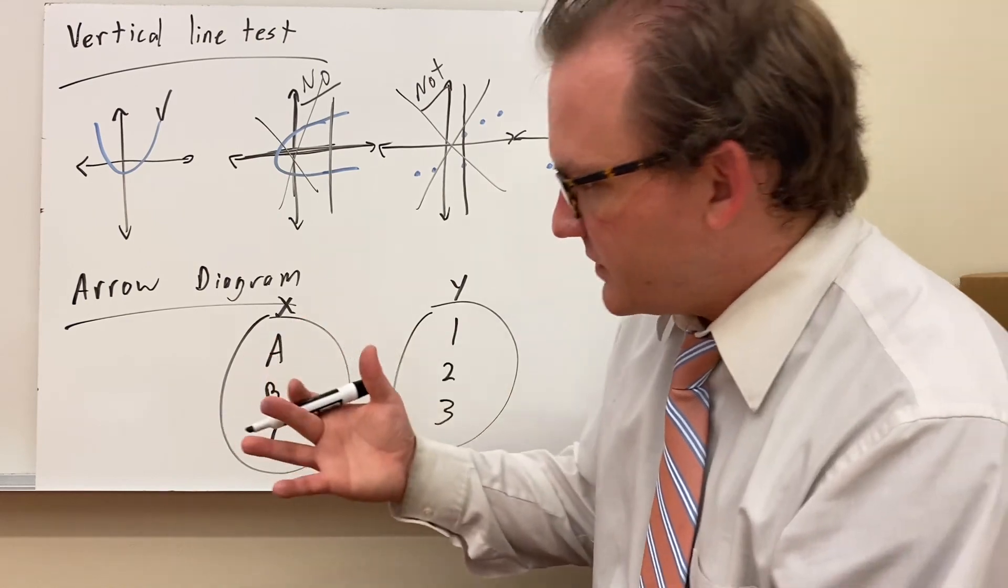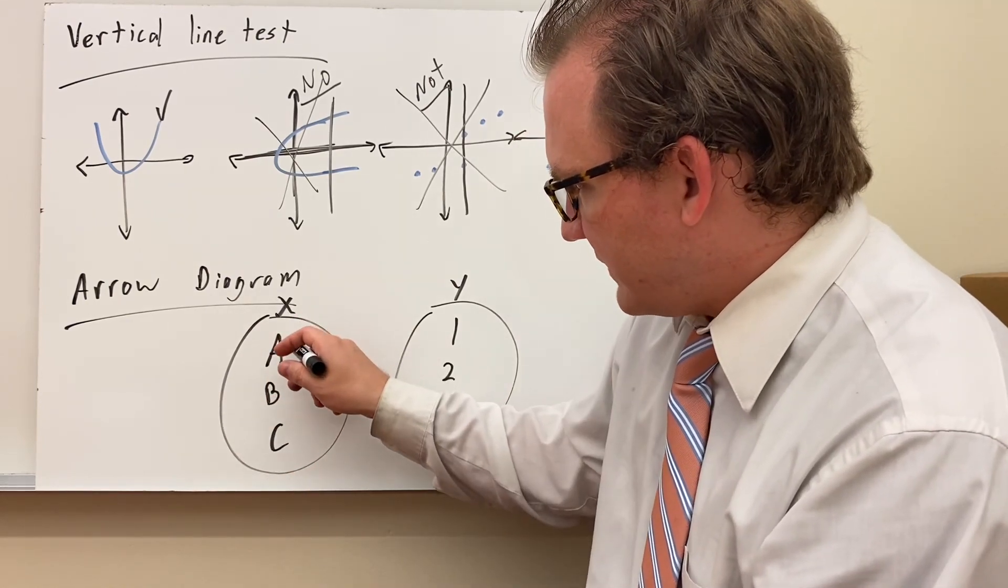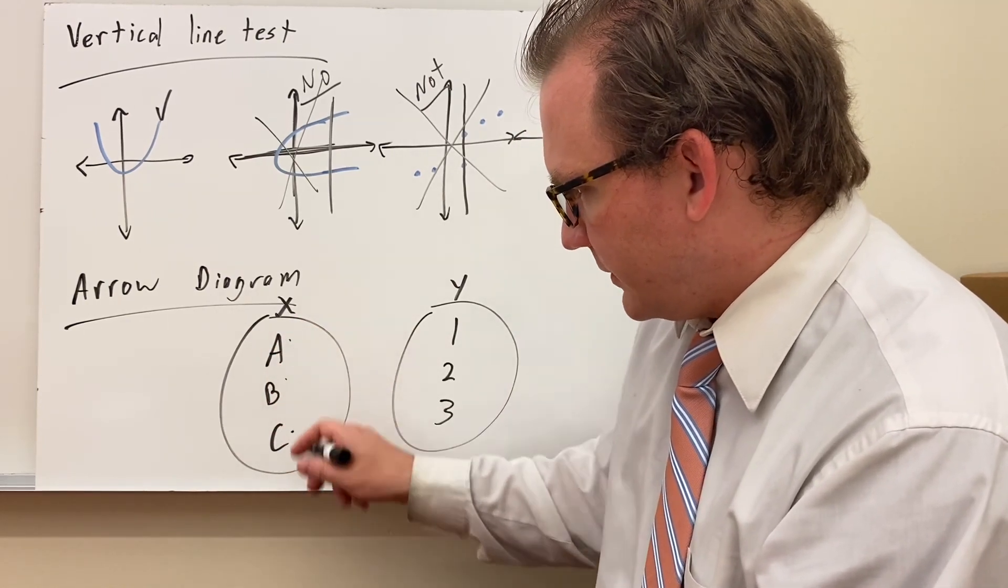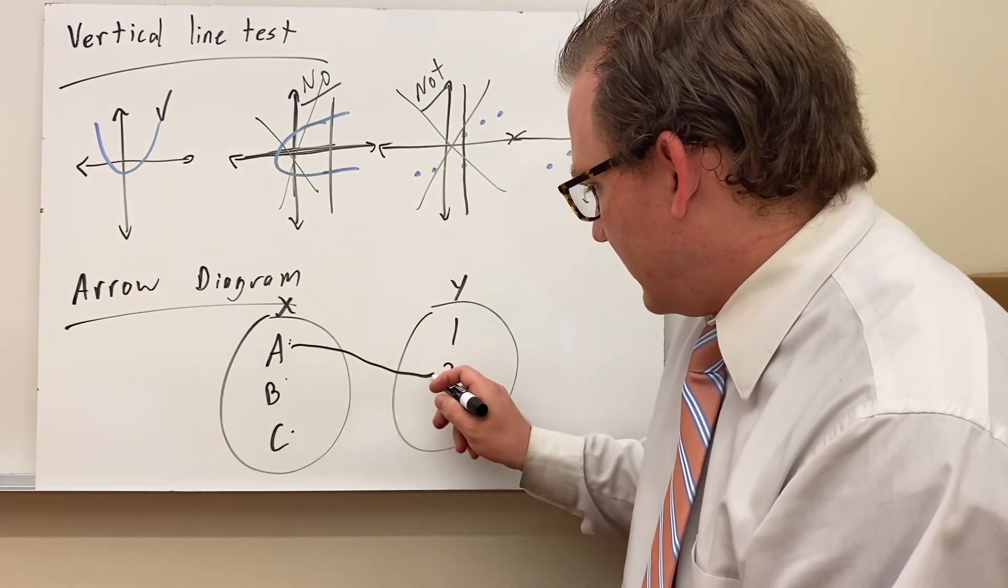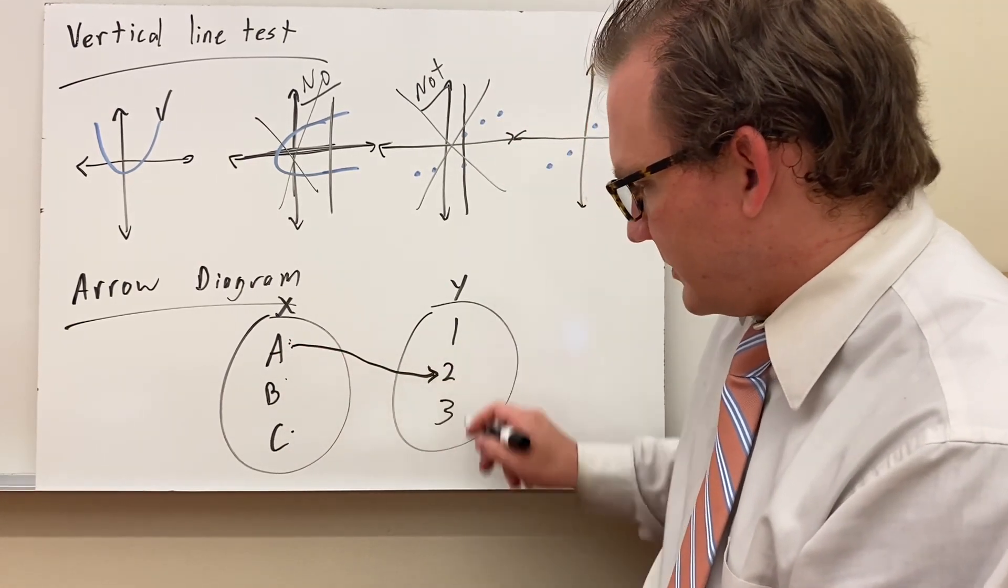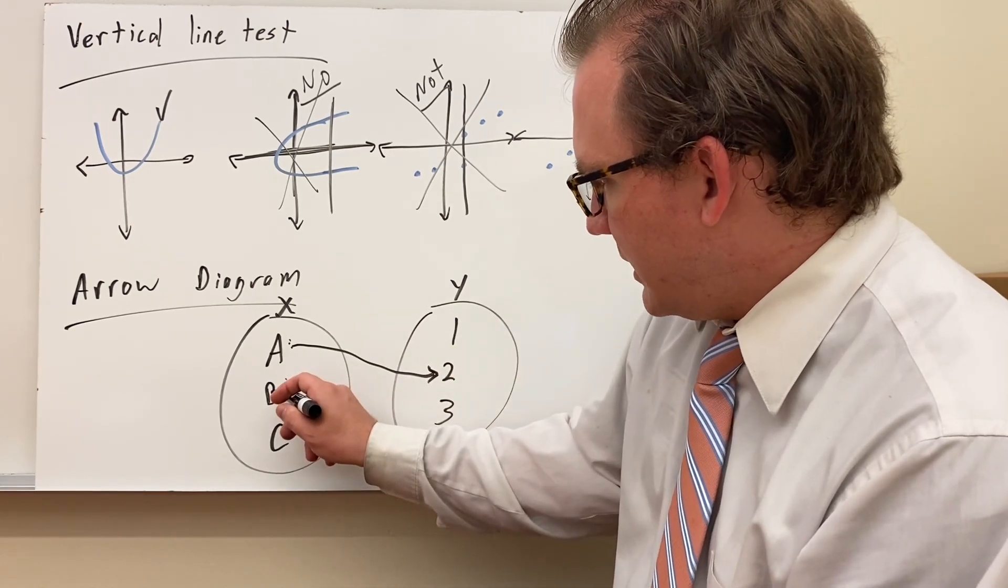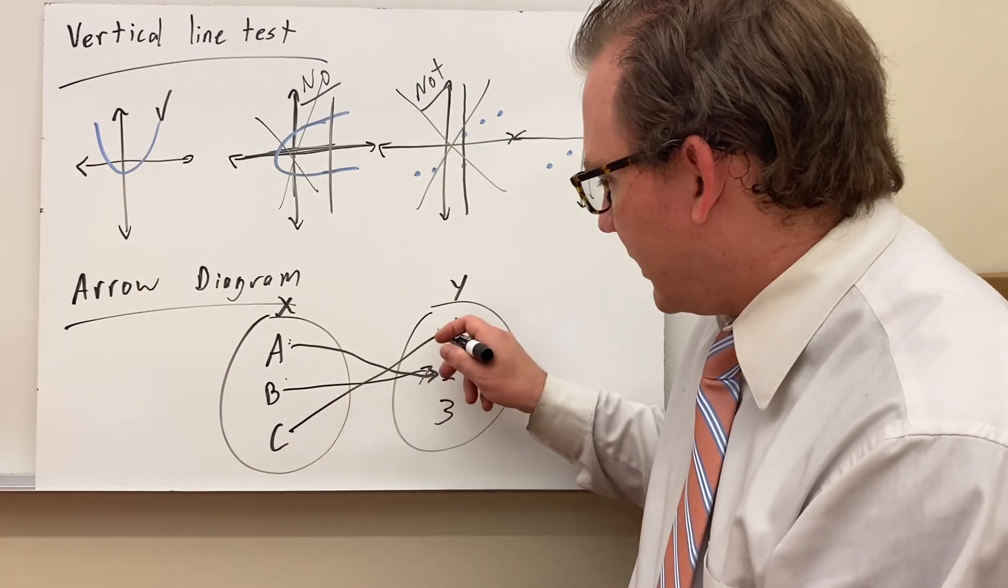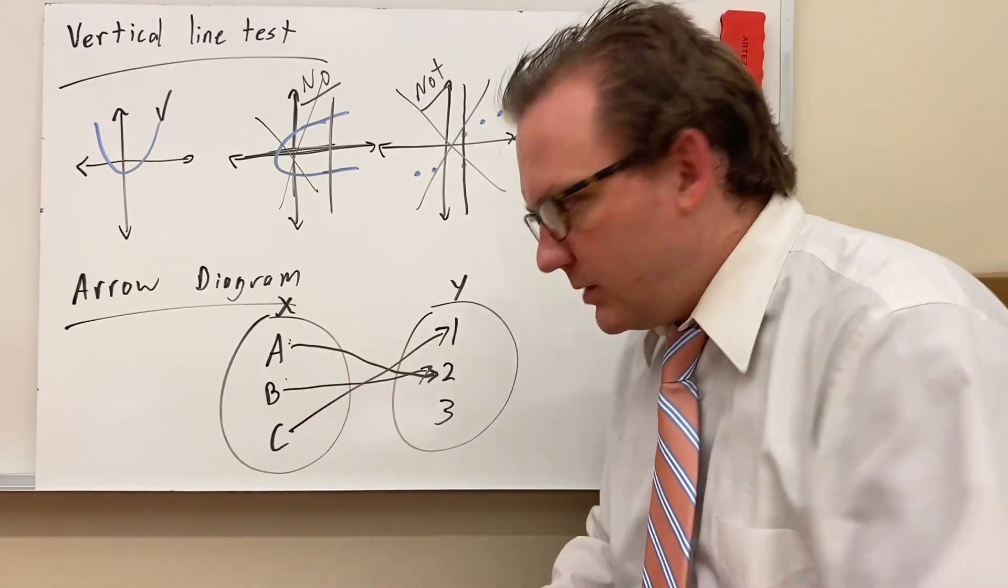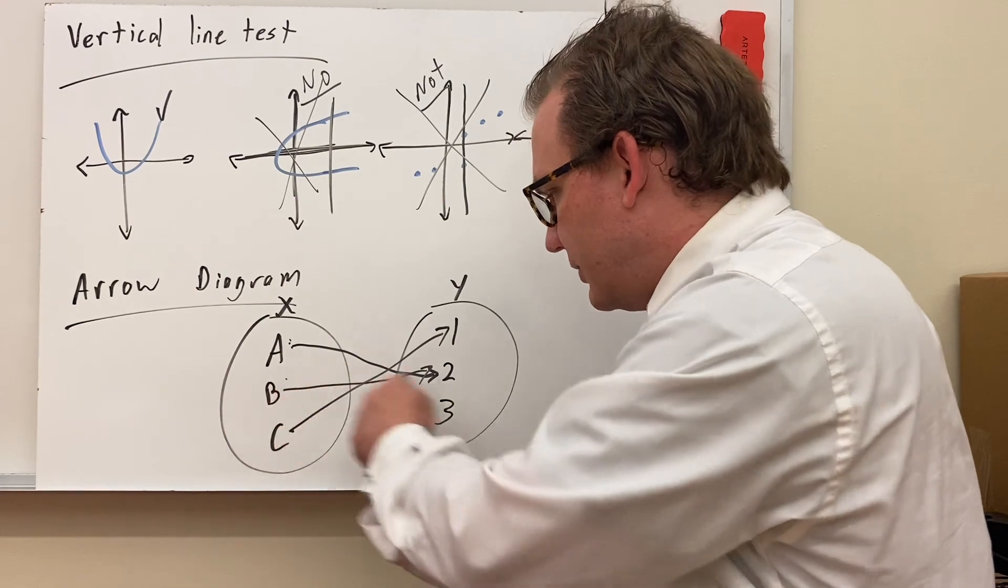An arrow diagram is another way to tell if it's a function. You take your x-values, you list them here, all the different unique x-values. And you say, okay, if I put in a, maybe I get two for my y-values. I put them here. And then b I might also get two. That's okay. And c I get one.